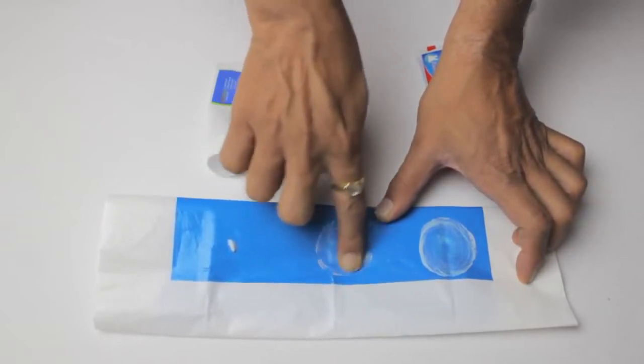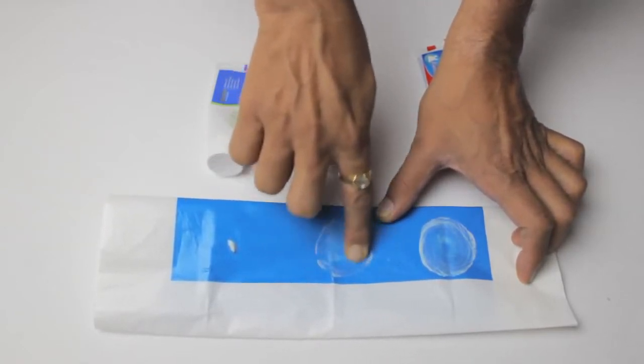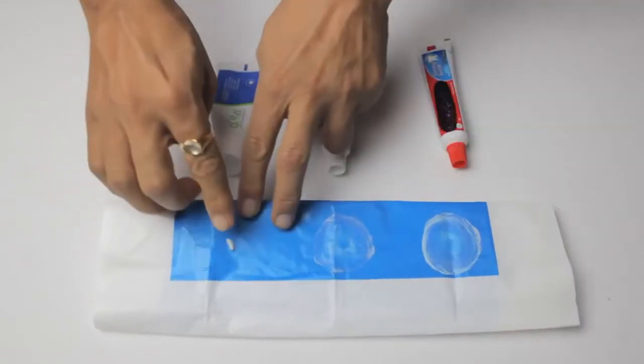Now we will try it with another market paste on the sheet of plastic. Look, as we go on moving, the particles in the toothpaste rub the plastic and take away the color.